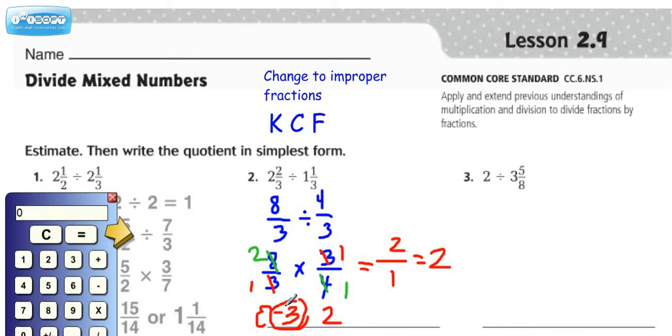Alright, so our estimate was 3. We should probably put the little symbol for estimate. And our actual answer was 2.